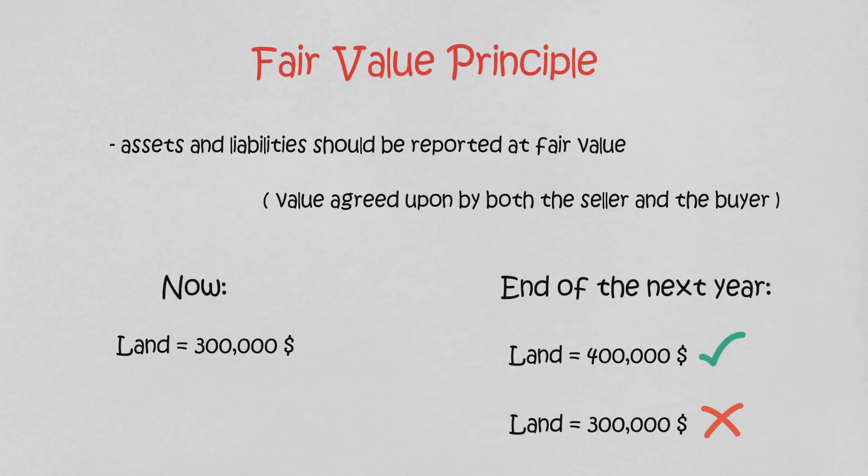In determining which measuring principle to use, companies weigh the factual nature of cost figures versus the relevance of fair value. In general, even though IFRS allows companies to revalue property, plant, and equipment and other long-lived assets to fair value, most companies choose to use the historical cost principle. Only in situations where assets are actively traded, such as investment securities, do companies apply the fair value principle extensively.